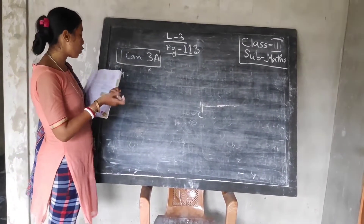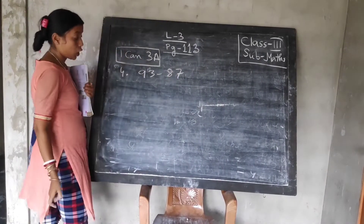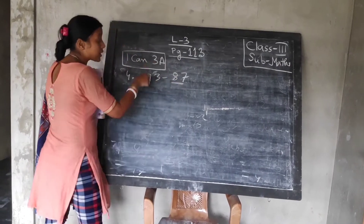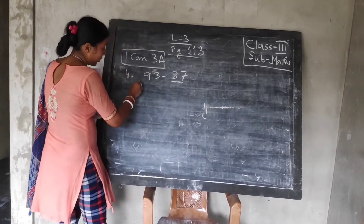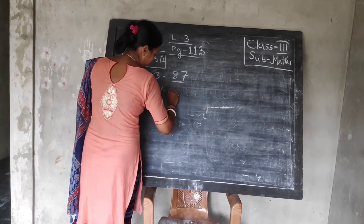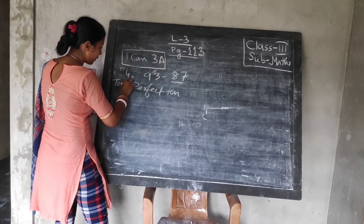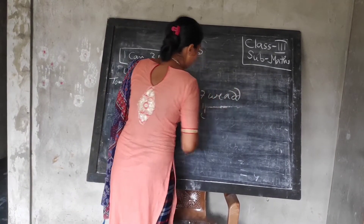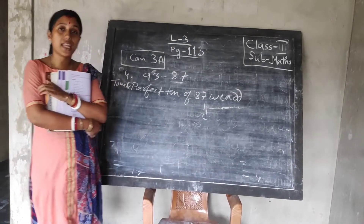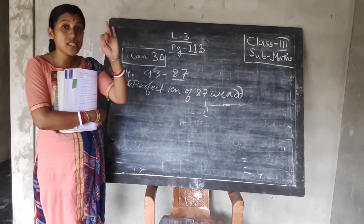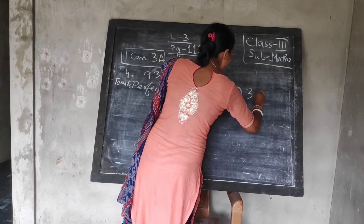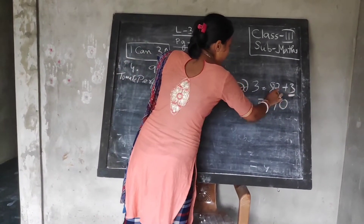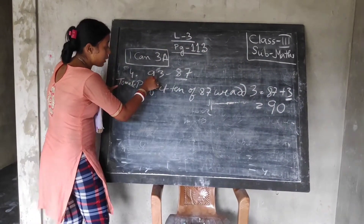You will do question number 4 in your copy. 93 minus 87 is given. Which number will we make a perfect 10? The smaller number — 87. The number with which we make it a perfect 10, you have to add the same number to the first number. First, make it a perfect 10. Perfect 10 of 87 — we add how much to 87 to make it a perfect 10? 87, 88, 89, 90. 90 is your perfect 10. So, we add 3. 87 plus 3 is 90. How much have we added with 87? We have added 3. We will add the same number with 93.